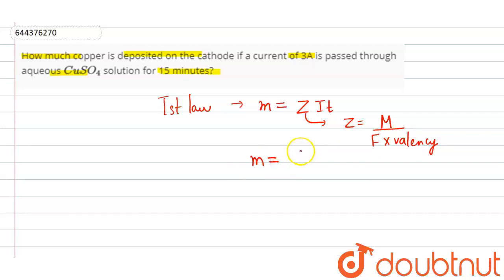The molar mass of copper will be 63.5 divided by 96500, multiplied by valency of copper which is plus 2, into current which is 3 amperes.